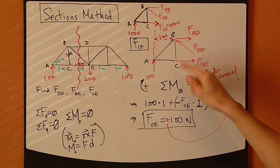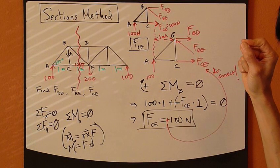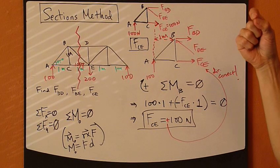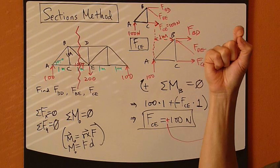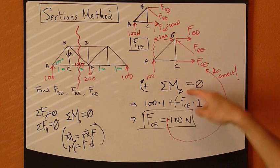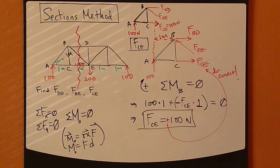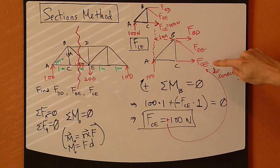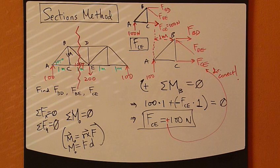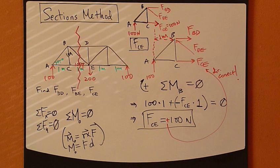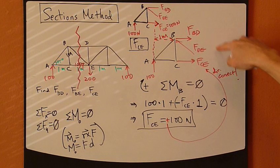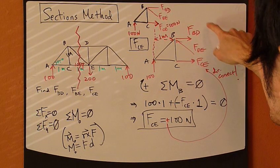So here's the general procedure: apply the moment equation, pick a clever point to eliminate unknowns. Now let's continue — I've found FBE. Let's find one of the other two. Let's find FBD.